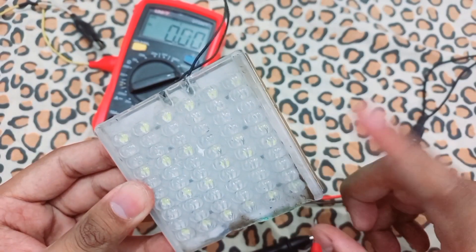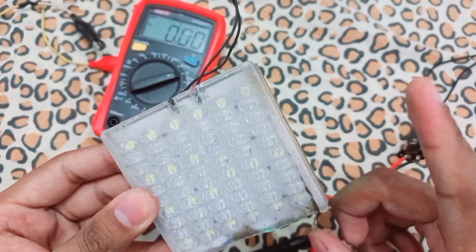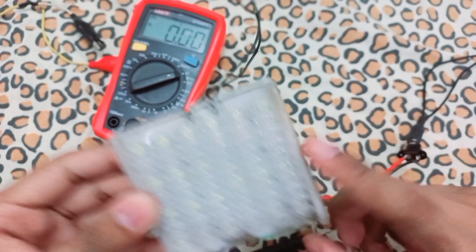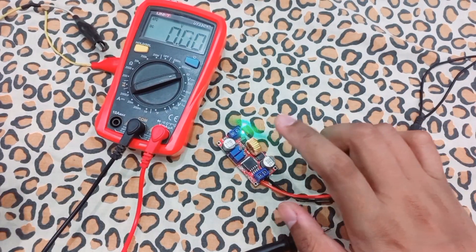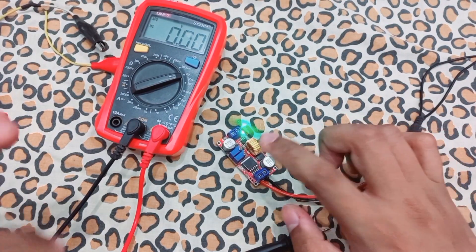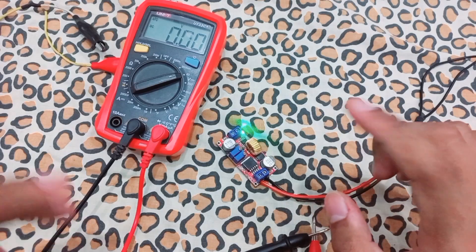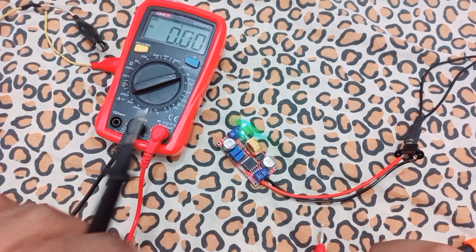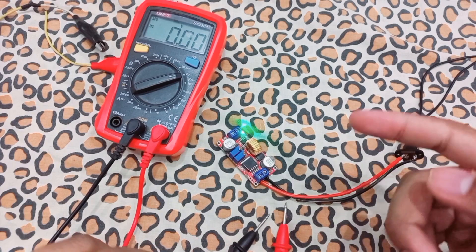This LED strip at 11 volts can easily take about 1 ampere. I will make sure that the current setting of this module will not exceed about 1 ampere.